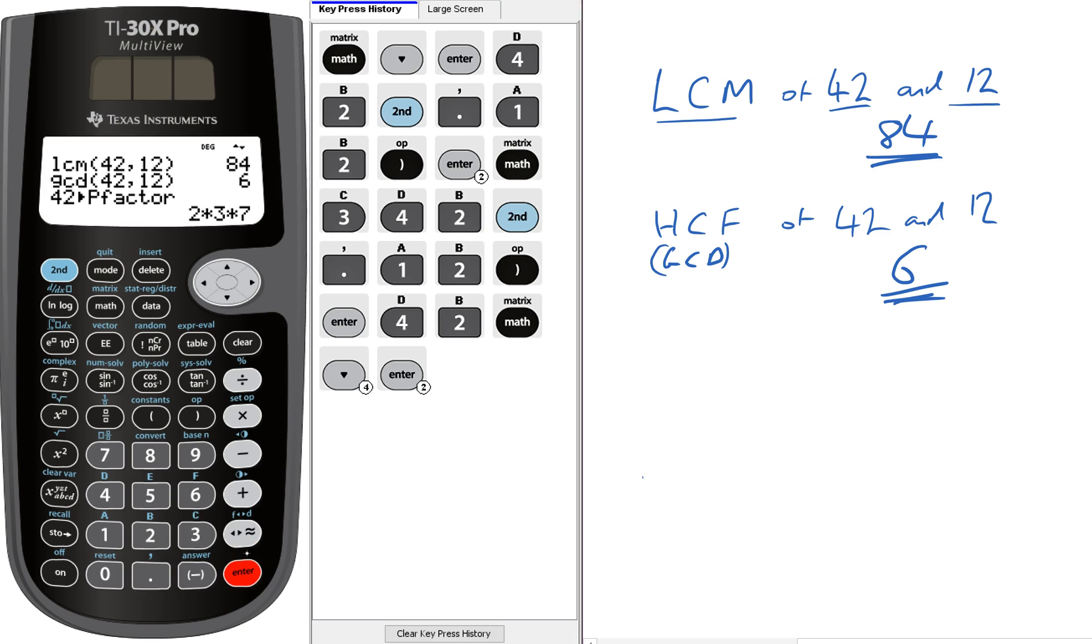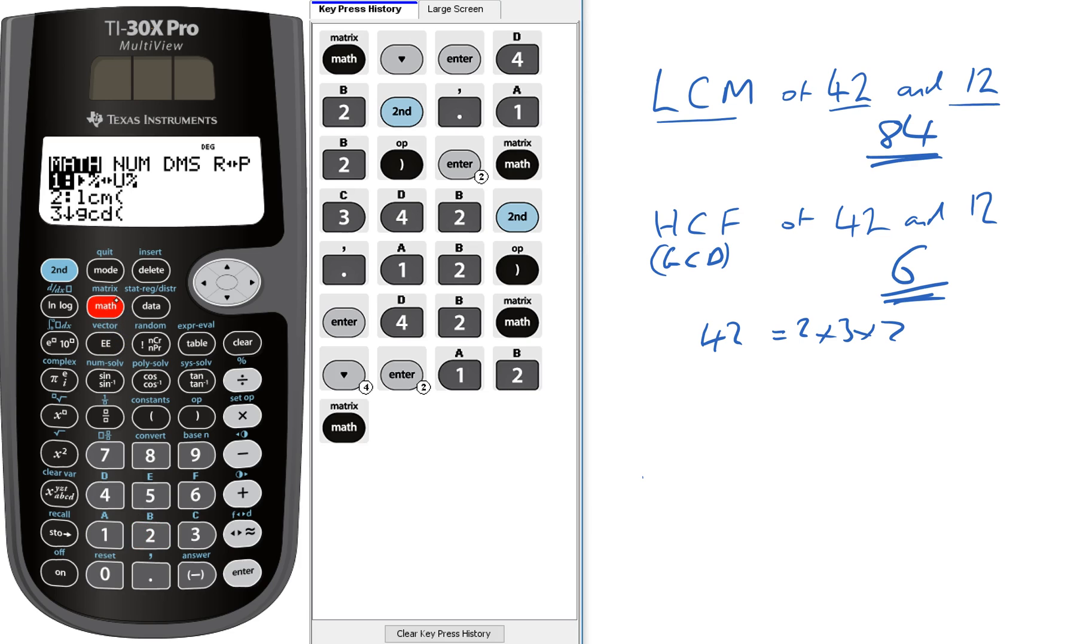42 is 2 times 3 times 7. And we wanted 12. Math. I can just press 4 this time because I know where it is. That is 12 is 2 squared times 3.